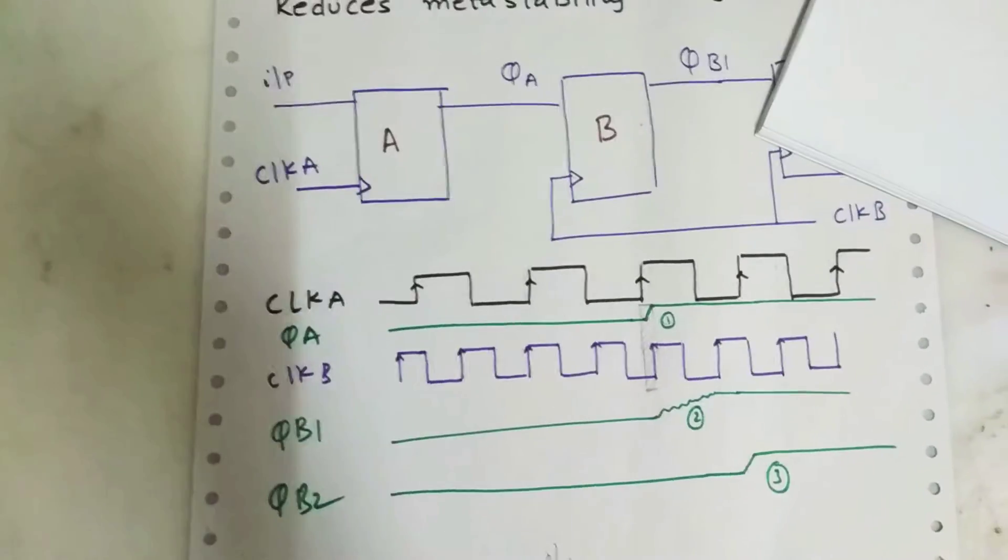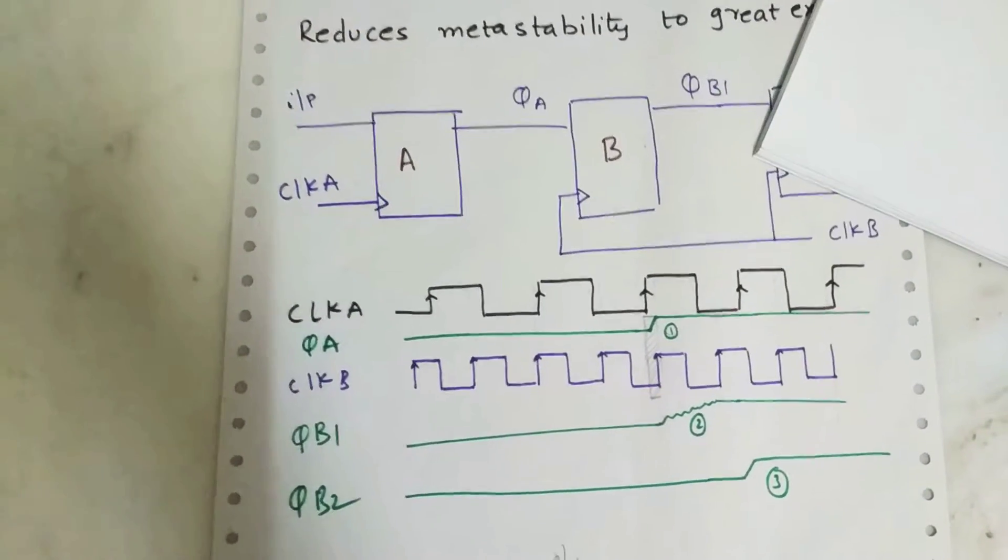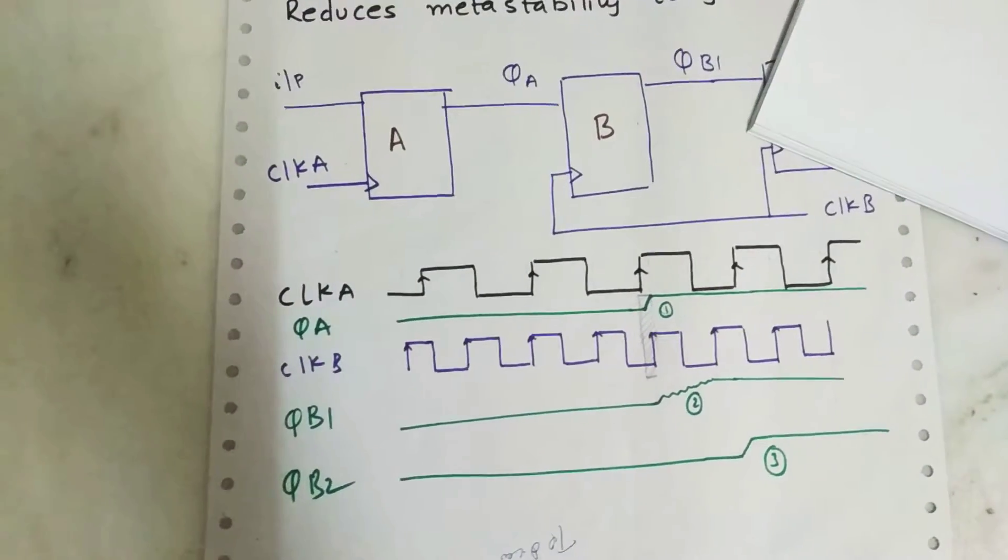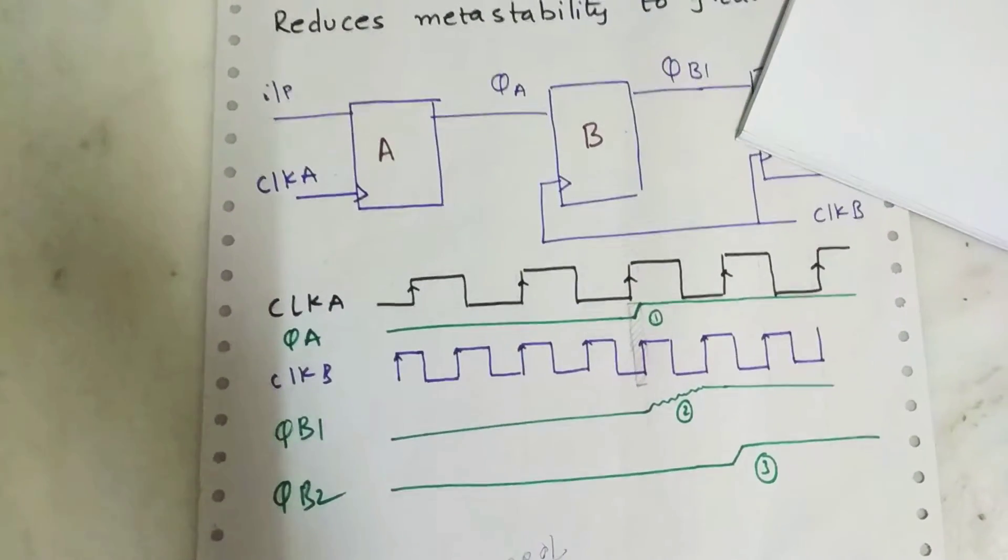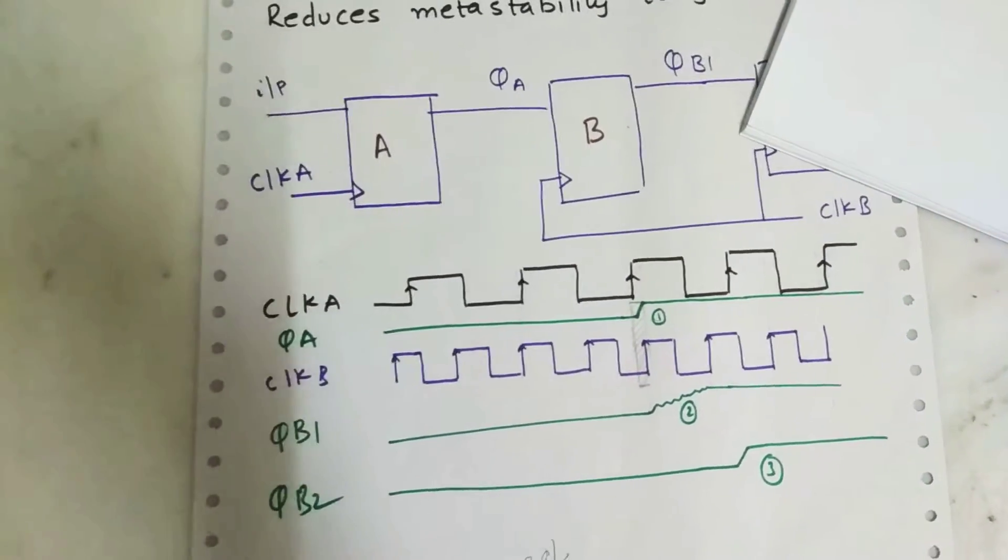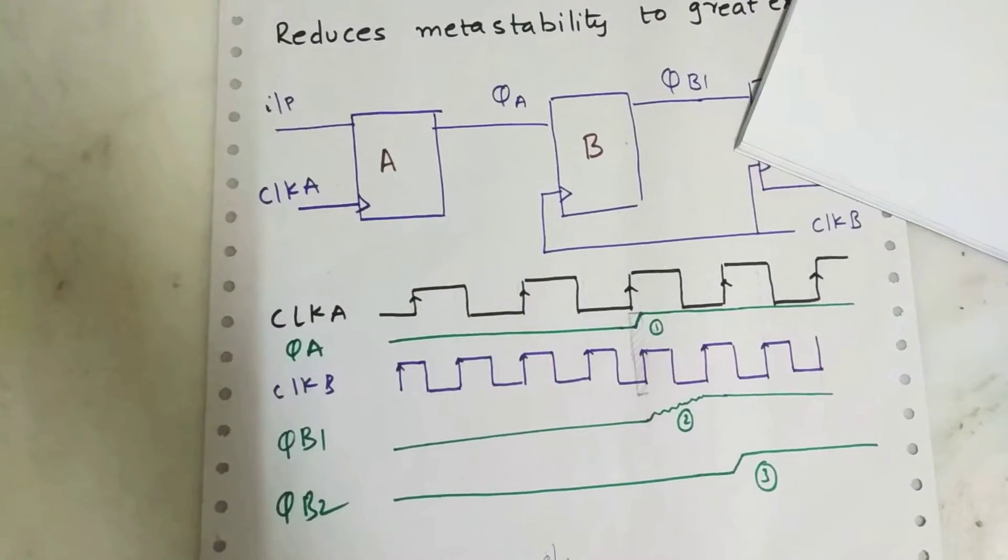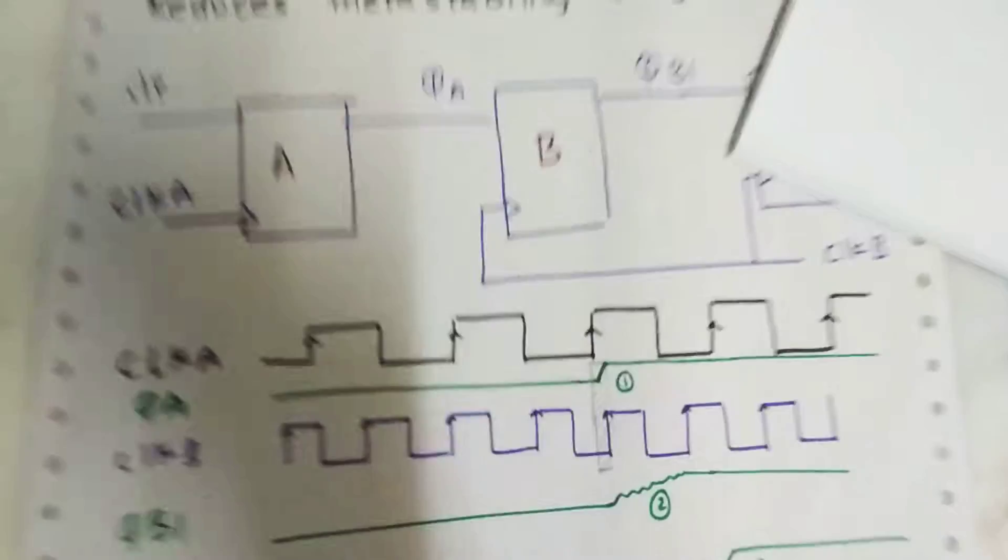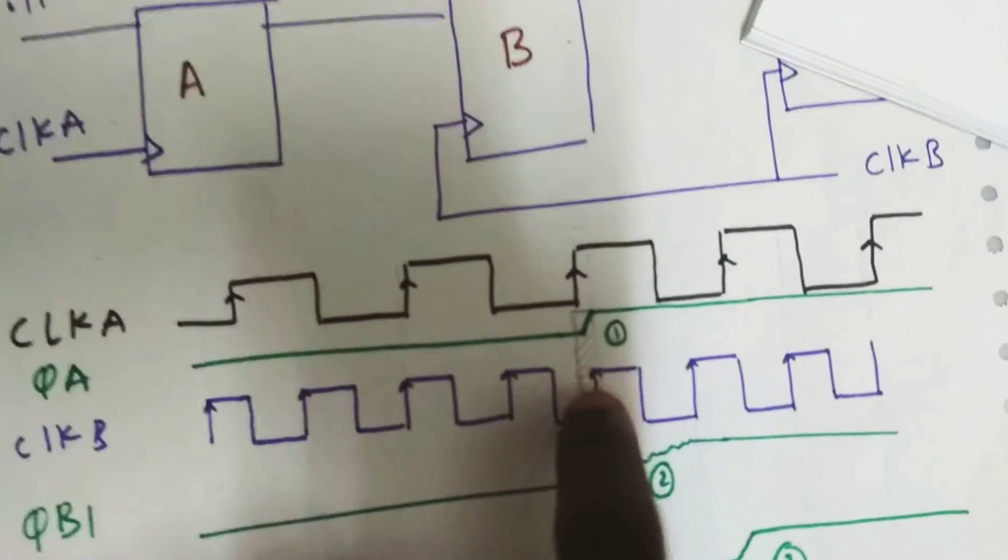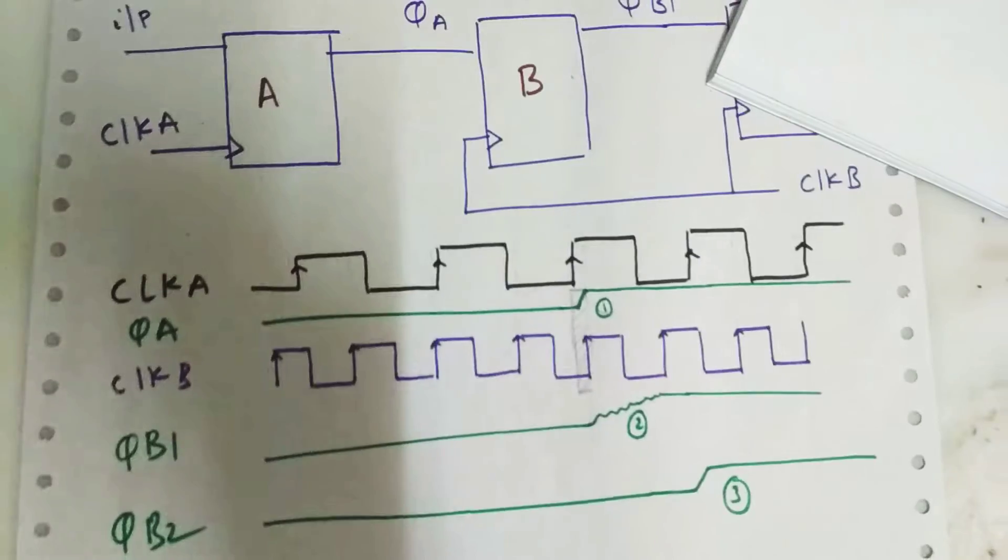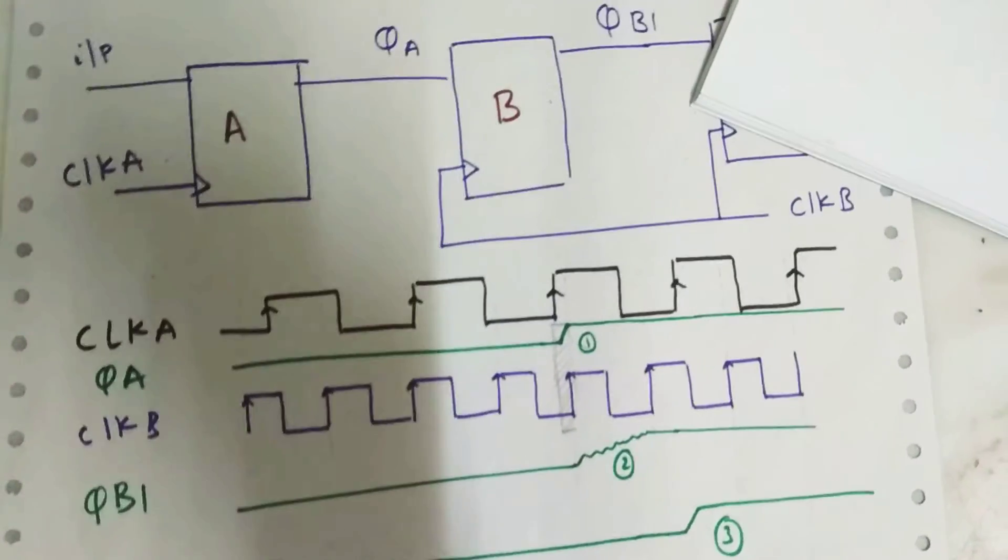So what happens now? Let's look at the timing diagram to have a better understanding. Clock A time period is larger than clock B time period. The output of clock A, QA, is causing no problem with the time period of clock A, but see, let's have a deeper look - it's changing in the setup window of clock B.